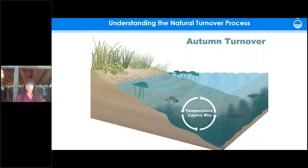It can also happen at other times — a rainstorm can cause the water column to mix and turn over. If you constantly mix the water column with a fountain or aeration system, you don't get that stratification and you're not susceptible to that sudden turnover.